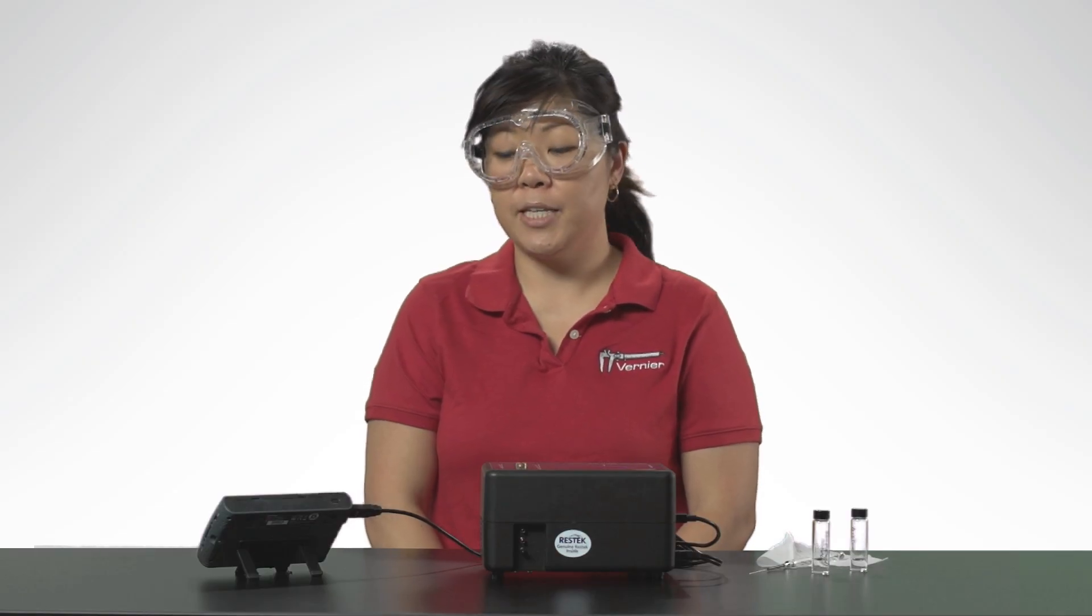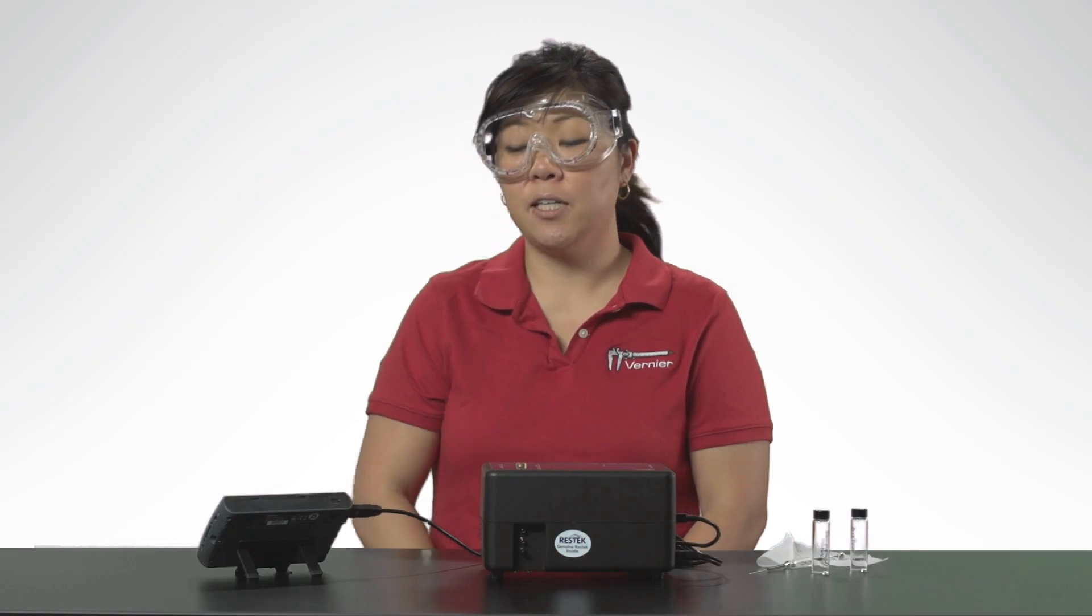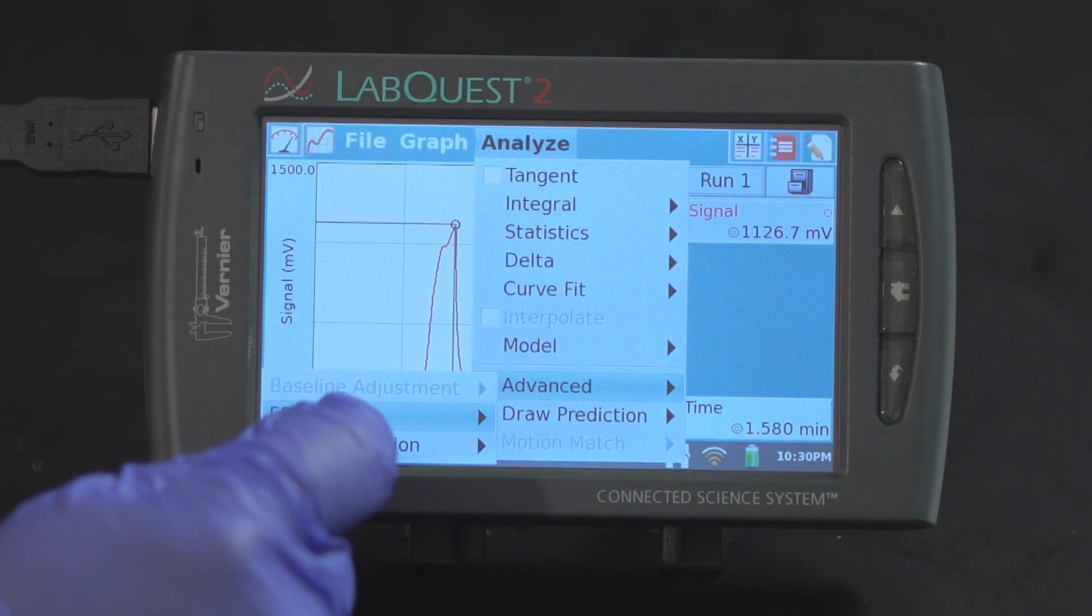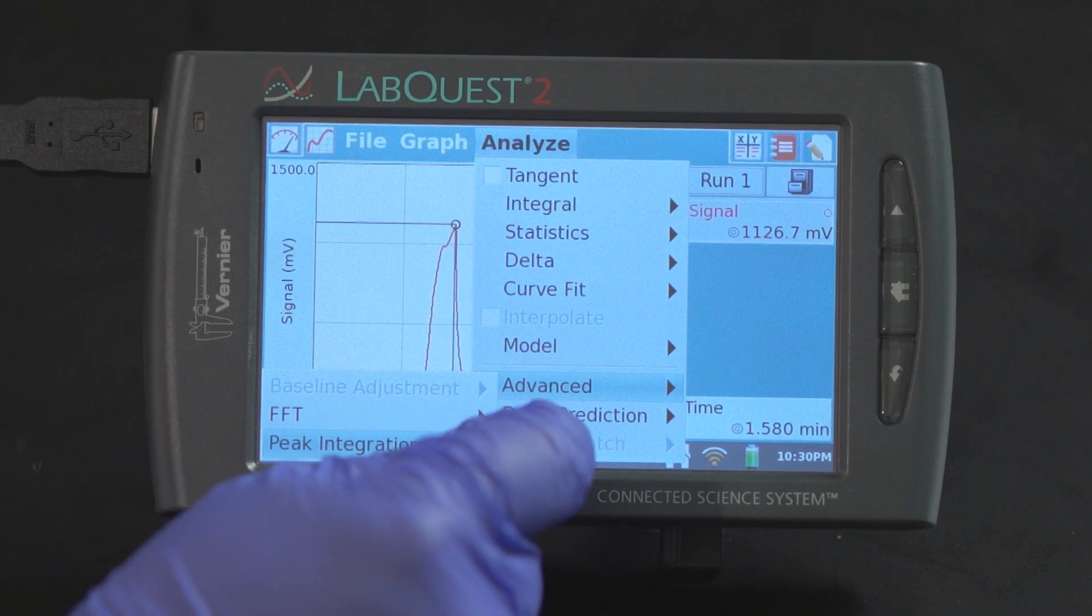Another analysis tool is peak integration. Tap on analyze, choose advanced, choose peak integration, then signal.